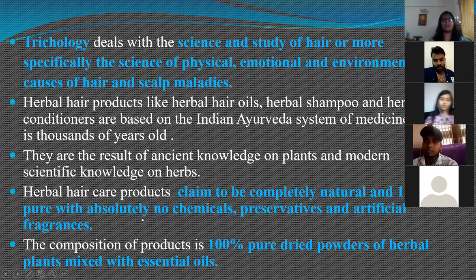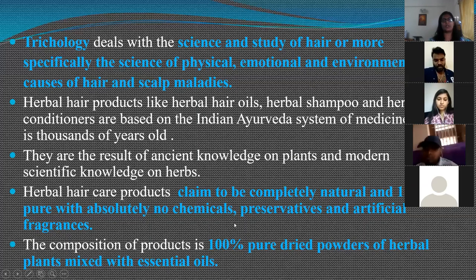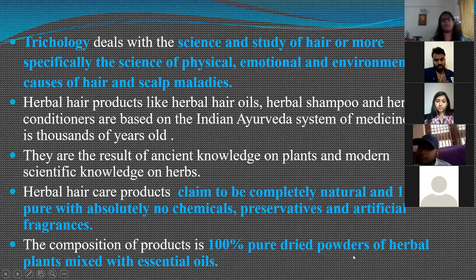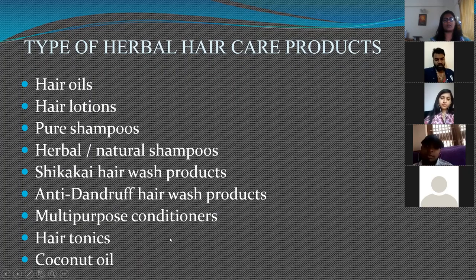Herbal hair products do not contain artificial preservatives or fragrances, and are made of 100% pure dried powders of herbs mixed with essential oils. The different types of herbal hair care products include hair oils, hair lotions, shampoos, shikakai hair wash products, anti-dandruff hair wash products, multi-purpose conditioners, hair tonics, and coconut oil.